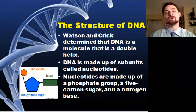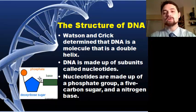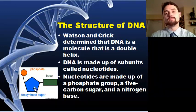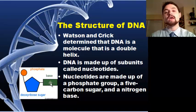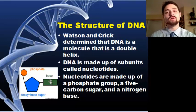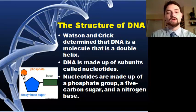DNA is made up of subunits called nucleotides, and you can see a nucleotide right here on your screen. A nucleotide is made up of a phosphate — this little circle right here — a sugar, the pentose sugar in this case, and a nitrogen base. That nitrogen base is what's going to change, and that is really what makes DNA carry the code that DNA possesses.